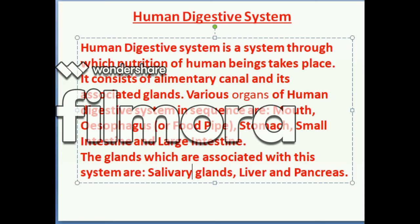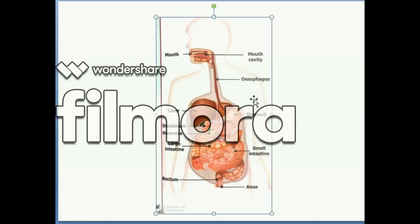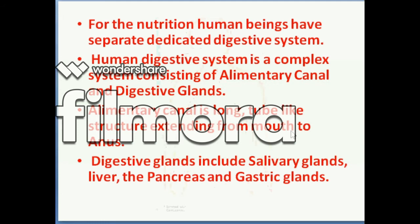Now this is the diagram. You can zoom in and see all the parts: mouth cavity, esophagus, stomach, small intestine, rectum, liver on this side, duodenum, pancreas, large intestine, and rectum. For nutrition, human beings have a dedicated digestive system.